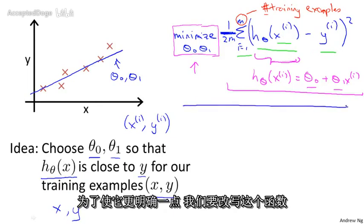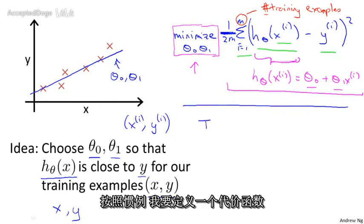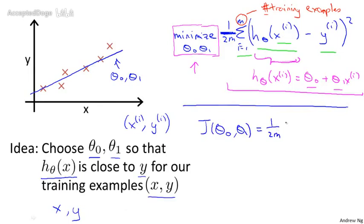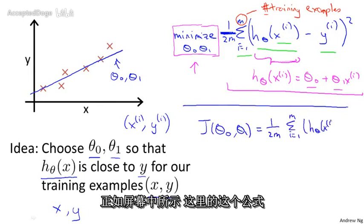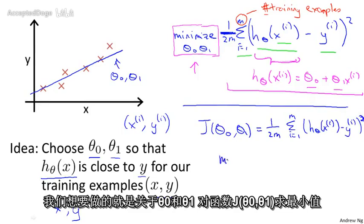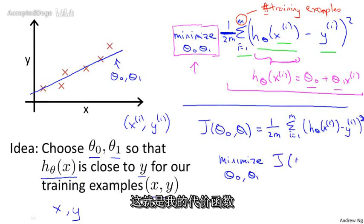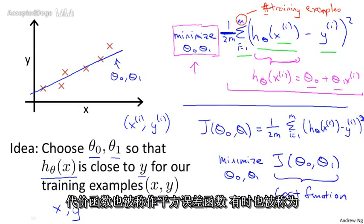And just to rewrite this out a little bit more cleanly, what I'm going to do is, by convention, we usually define a cost function, which is going to be exactly this, that formula that I have up here. And what I want to do is minimize over θ₀ and θ₁ my function J(θ₀, θ₁). We'll just read this out. This is my cost function.